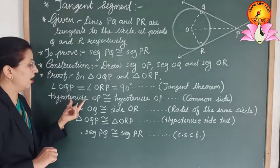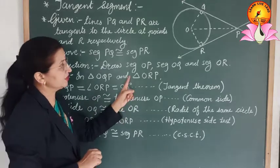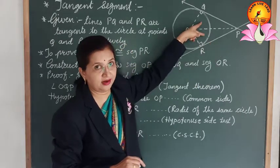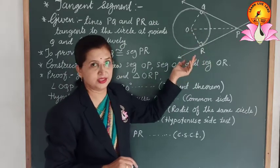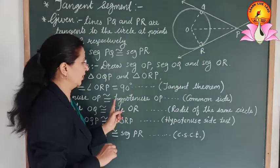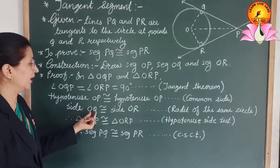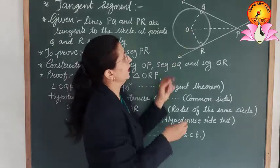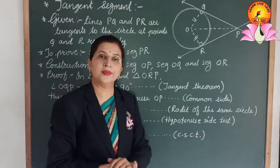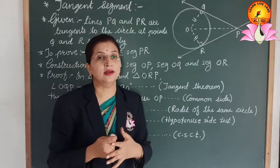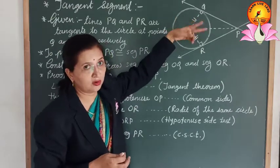For the third pair: side OQ is congruent to side OR, as these are radii of the same circle. So we have three pairs of congruent elements, which allow us to prove that the two triangles are congruent. Therefore, triangle OQP is congruent to triangle ORP by the Hypotenuse-Side (HS) congruence criterion.